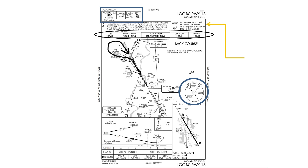Second, when flying a back course approach, navigation aids such as a CDI needle or HSI will have reverse sensing, meaning the needles will deflect in the same direction as the aircraft and the pilot needs to fly away from the needle, as opposed to standard approaches which require the pilot to fly towards the needle.